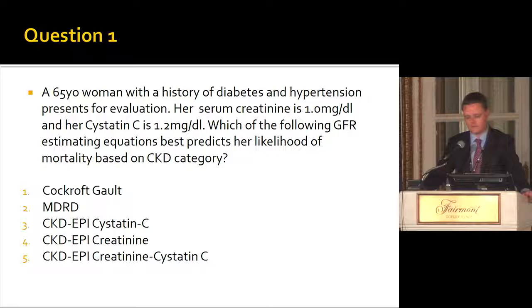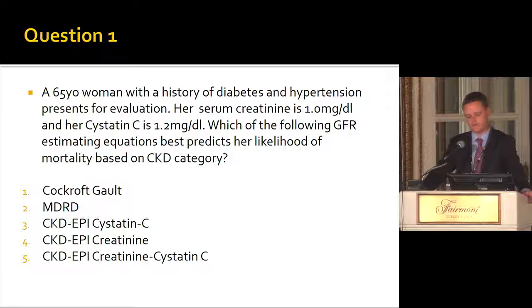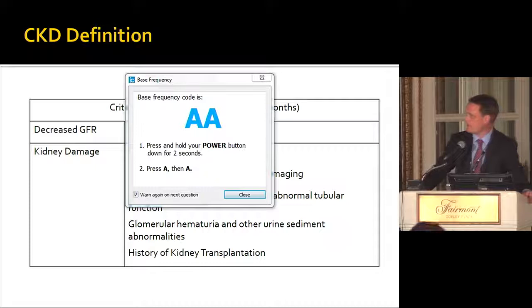The issue is that whether or not she has CKD, as defined by eGFR category, depends on which equation you use. Her eGFR by cystatin C is 56, classifying her as stage 3 CKD, while her eGFR by CKD-EPI creatinine is 63. Which one categorizes her best in terms of cardiovascular mortality risk? We'll get back to the answer later.